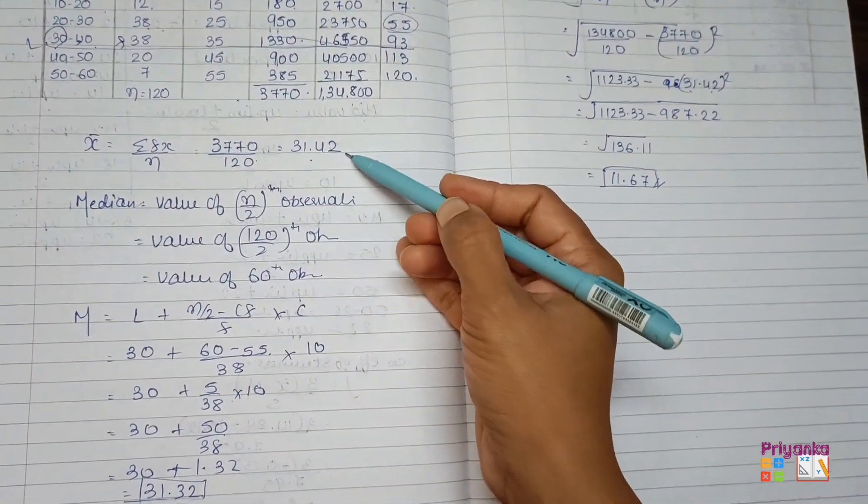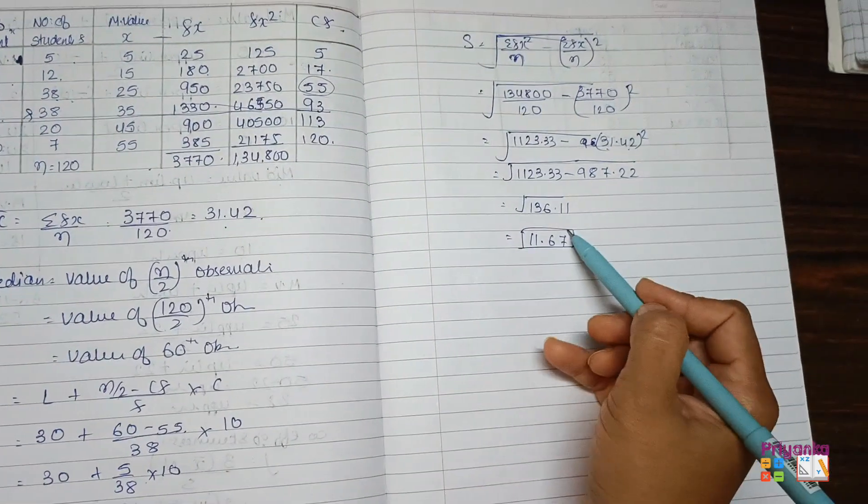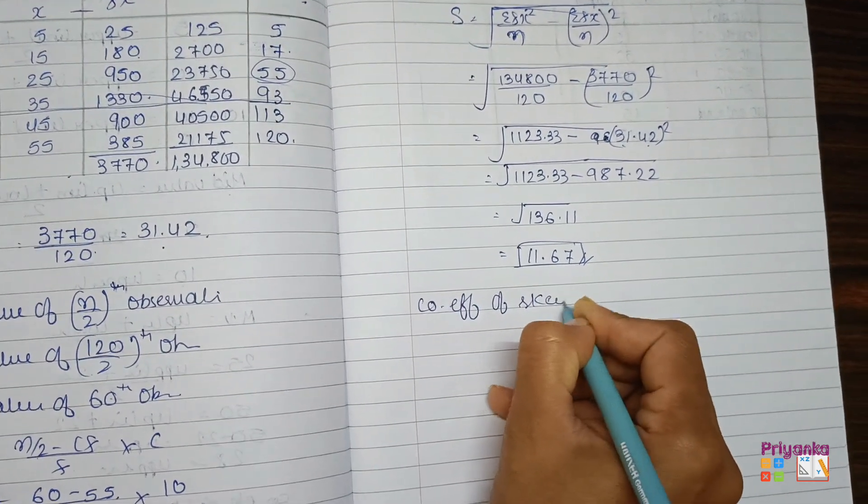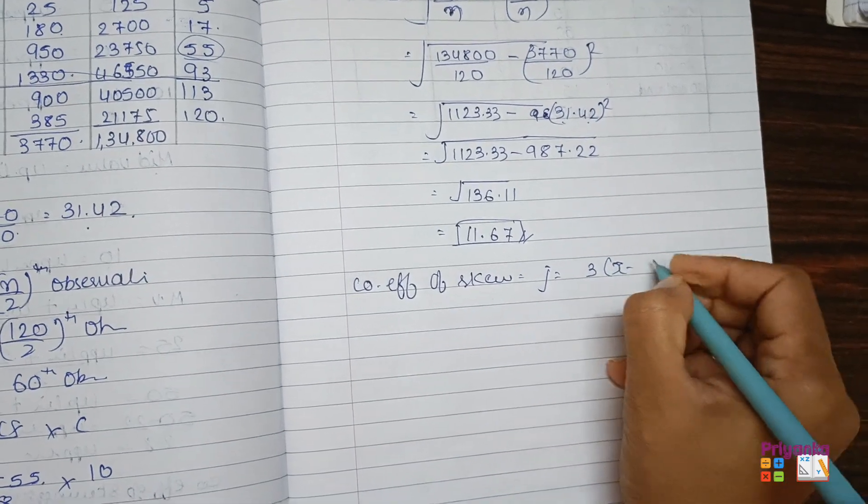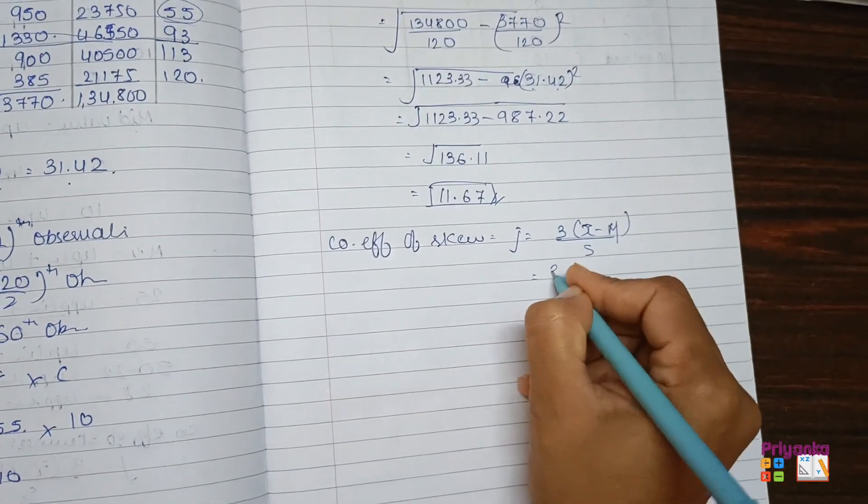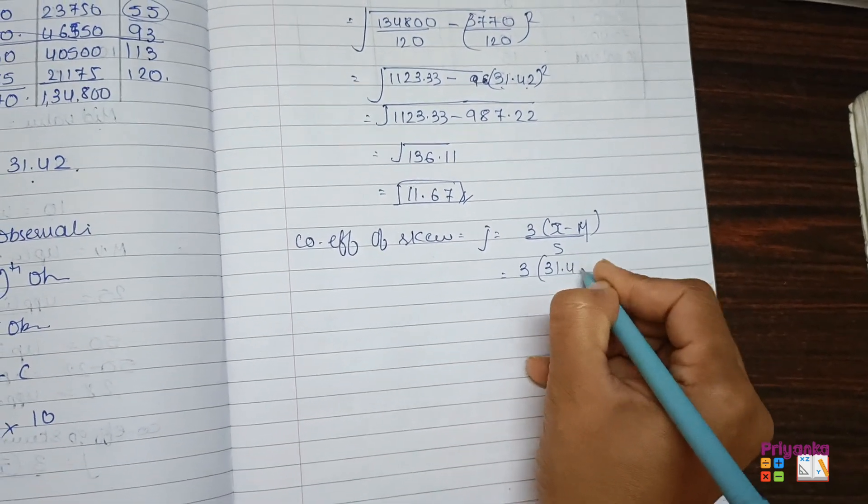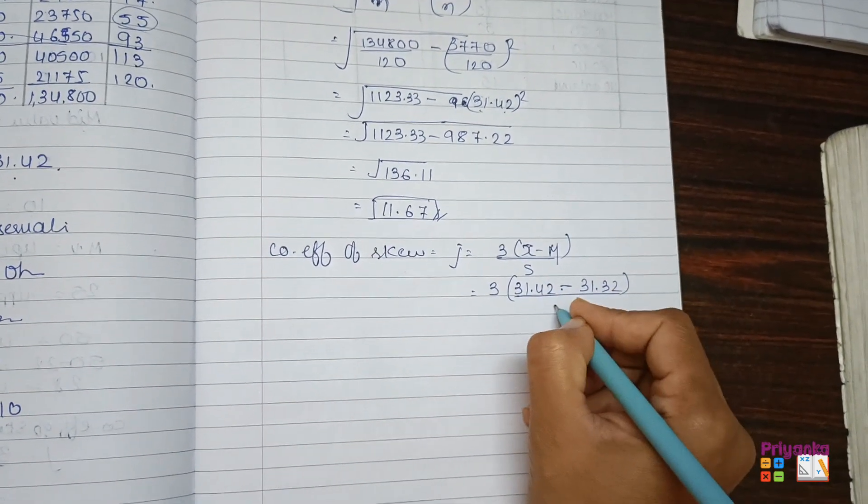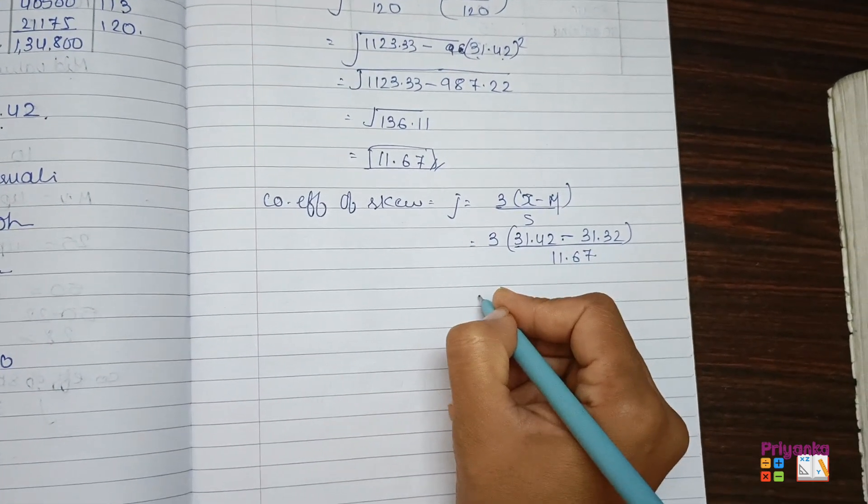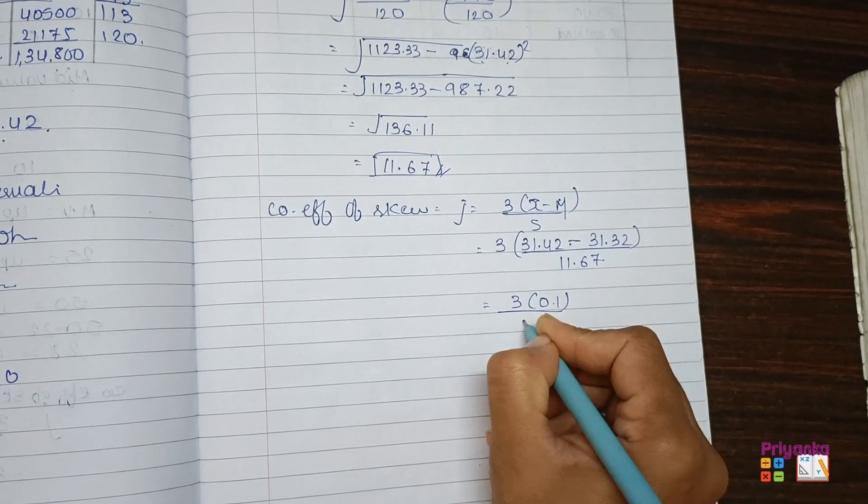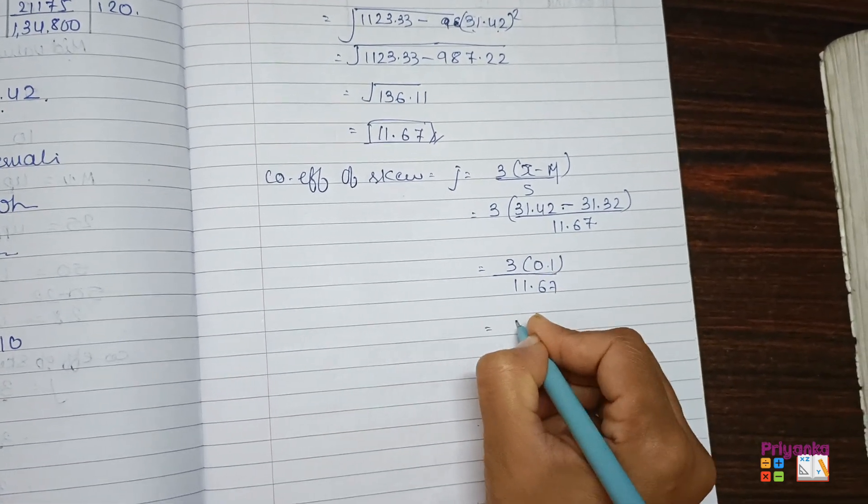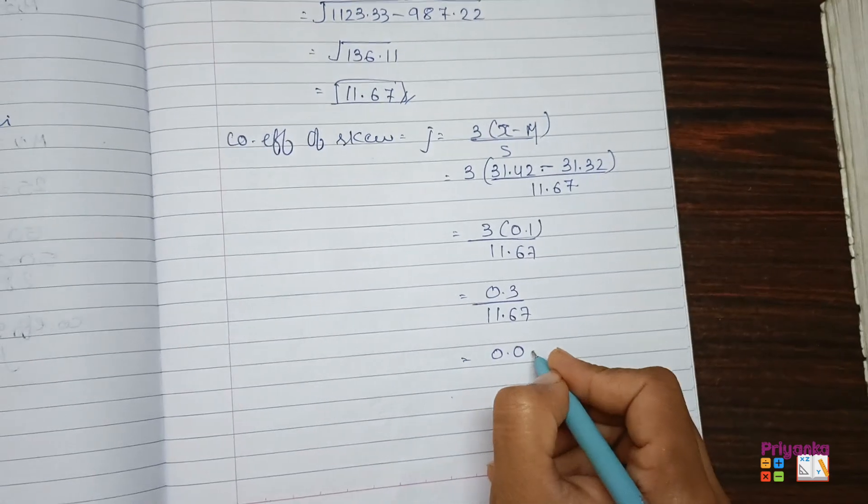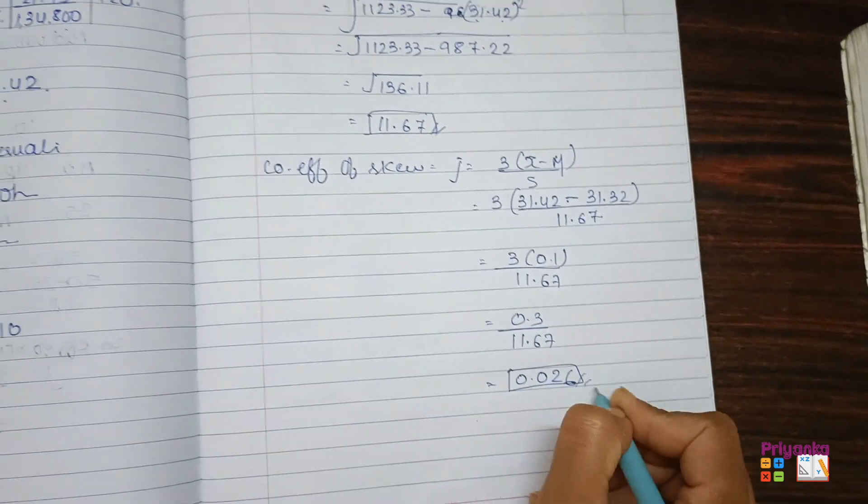So here all the values are ready, mean, median and standard deviation. So here we'll find out coefficient of skewness, that is 3 mean minus median upon standard deviation. Now we'll keep the value, 31.42 for mean, median is 31.32, standard deviation is 11.67. That is 3, 0.1 divided by 11.67, the multiplication of this 0.3 divided by 11.67 and here we get the answer 0.026.